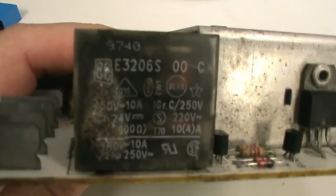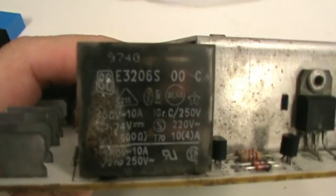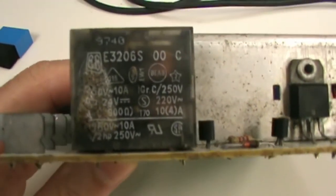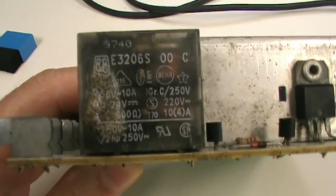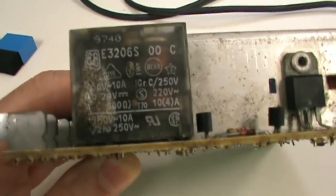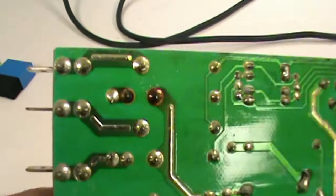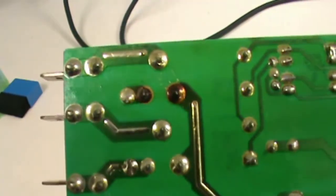Looking at the relay you can see the part number is the E3206S. The stock one is a 24 volt relay rated at 10 amps on the contacts. If you look at the connections on this first one you can see they've overheated.